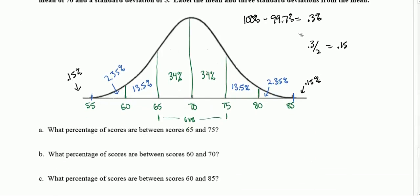Now we can answer all these questions pretty easily. What percent is between 65 and 75? That's your 34 plus 34, that's your 68. What percent are between 60 and 70? That's 13.5 plus 34, which is 47.5%.